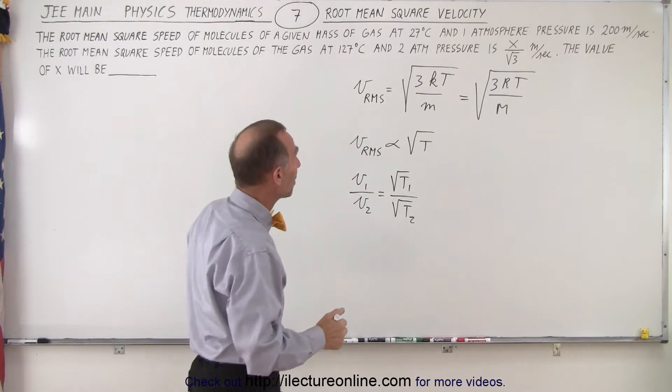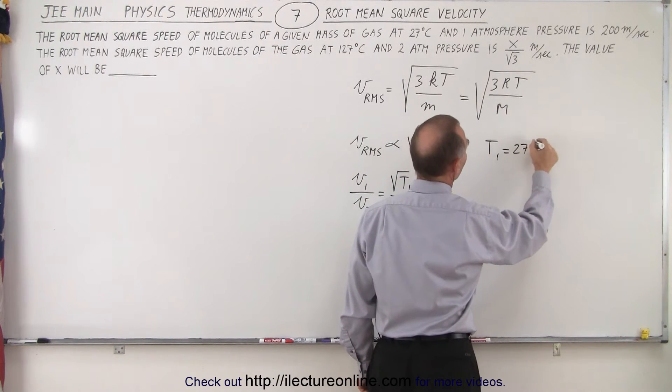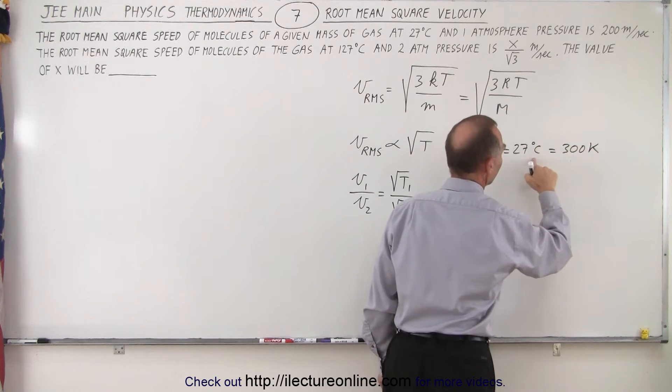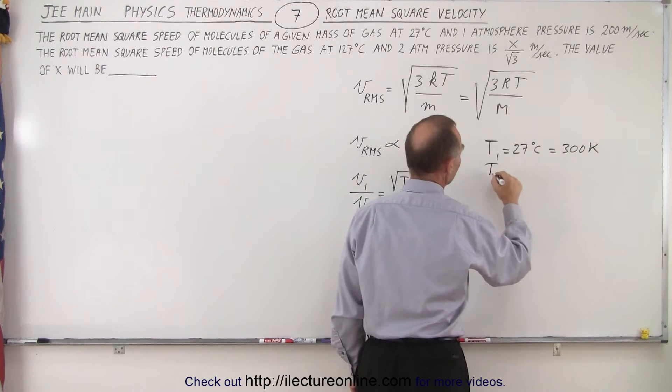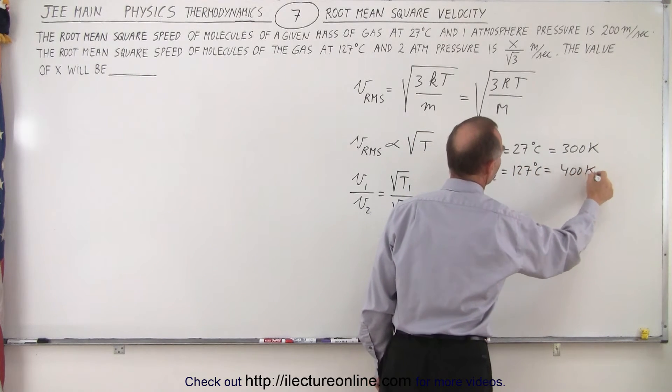Now, plugging in values, remember that T1 was equal to 27 degrees Celsius, which is equal to 300 Kelvin. We have to add this to 273 to get 300, and T2, which is 127 degrees Celsius, will therefore be 400 Kelvin.